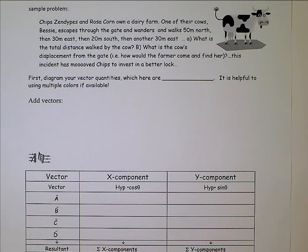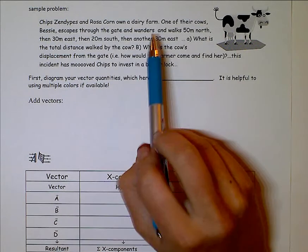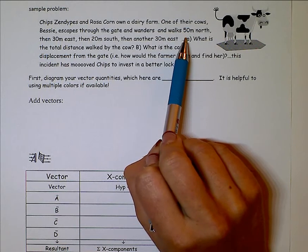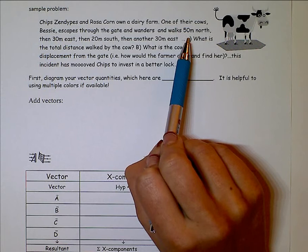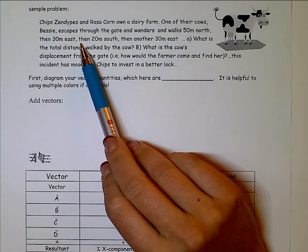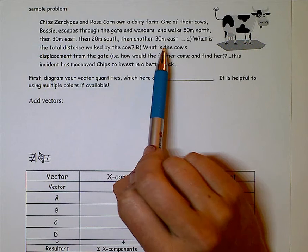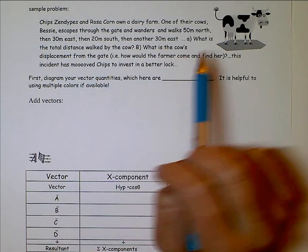Chips and Dips and Rosicorn own a dairy farm. One of their cows, Bessie, escapes the gate and wanders 50 meters to the north and then she stops and turns 30 meters to the east and then goes down 20 meters south and then another 30 meters east. I'm looking for two answers. First of all, what is the total distance that the cow walks?